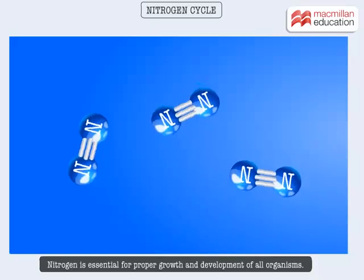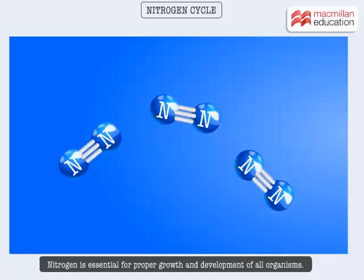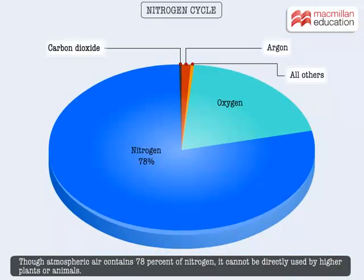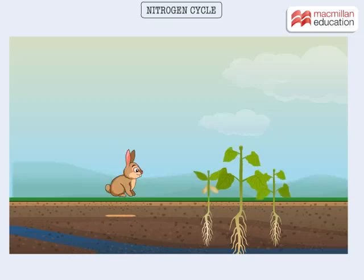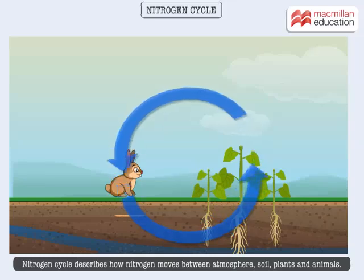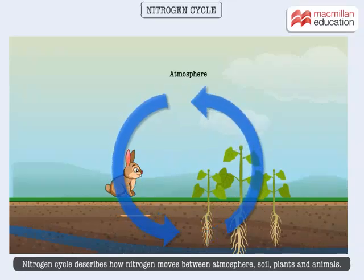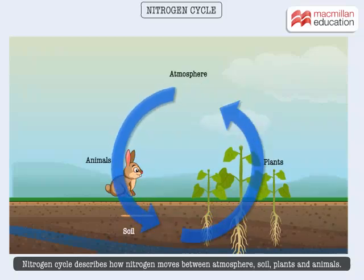Nitrogen is essential for proper growth and development of all organisms. Though atmospheric air contains 78% of nitrogen, it cannot be directly used by higher plants or animals. Plants assimilate nitrogen and supply it to animals. The nitrogen cycle describes how nitrogen moves between the atmosphere, soil, plants, and animals, and it involves various stages.